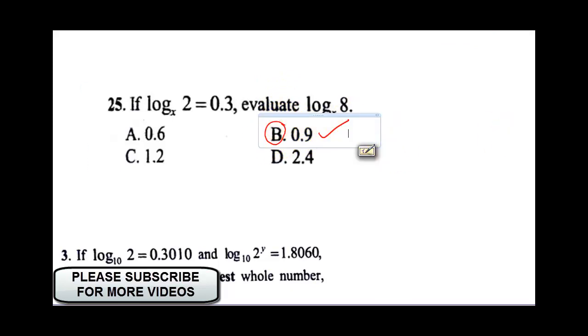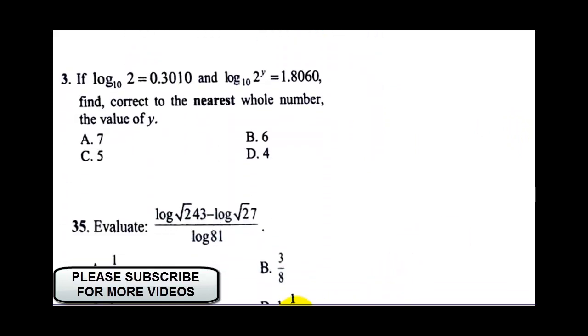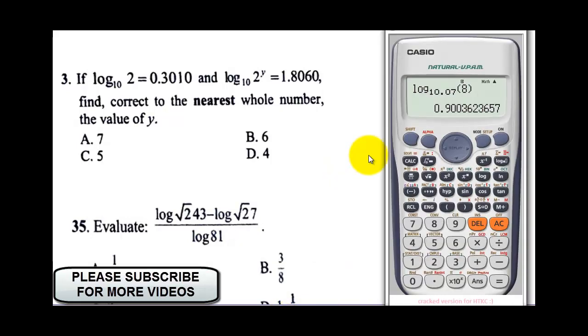Okay, so to solve the next question, it says if log 10 raised to power, 10, 2, it's equal to D, and log 10, 2, Y, it's D, it's fine correct to the nearest whole number, the value of Y.